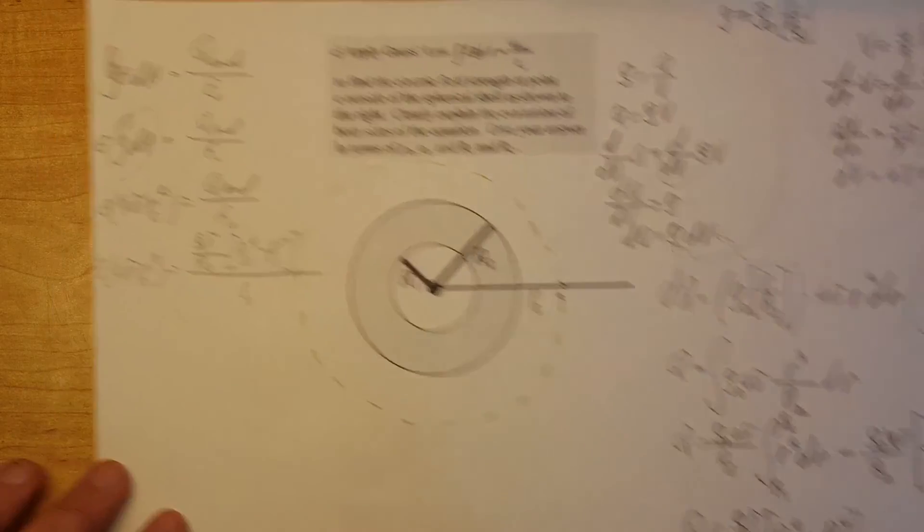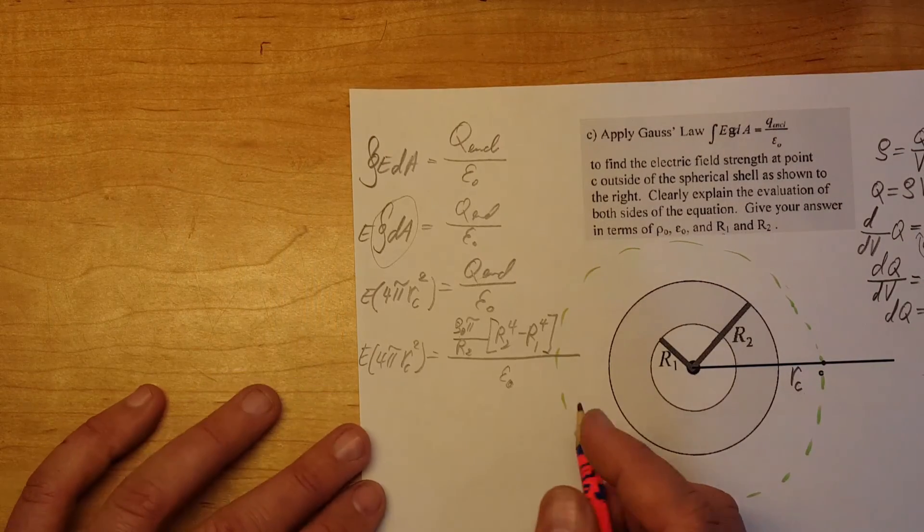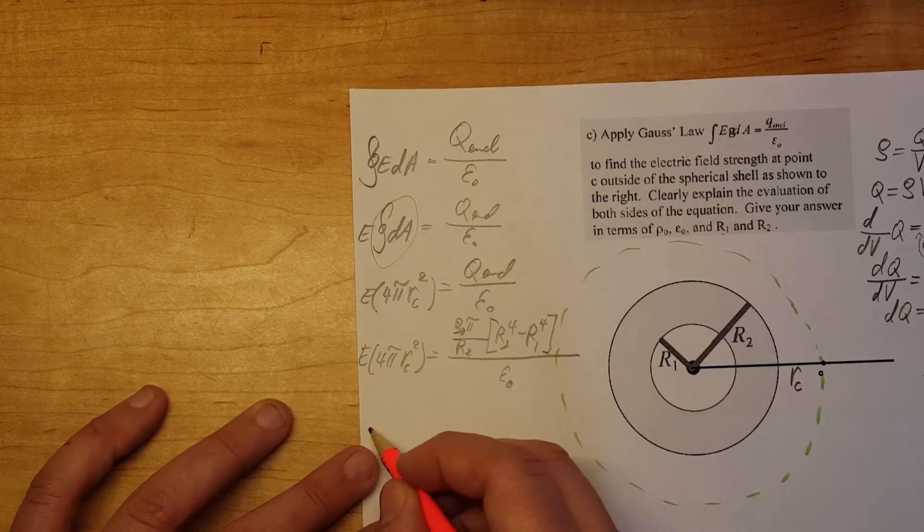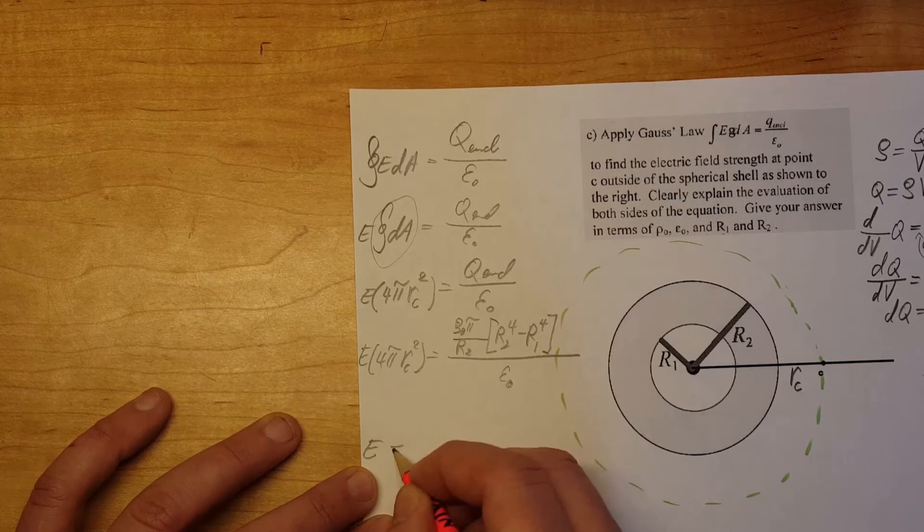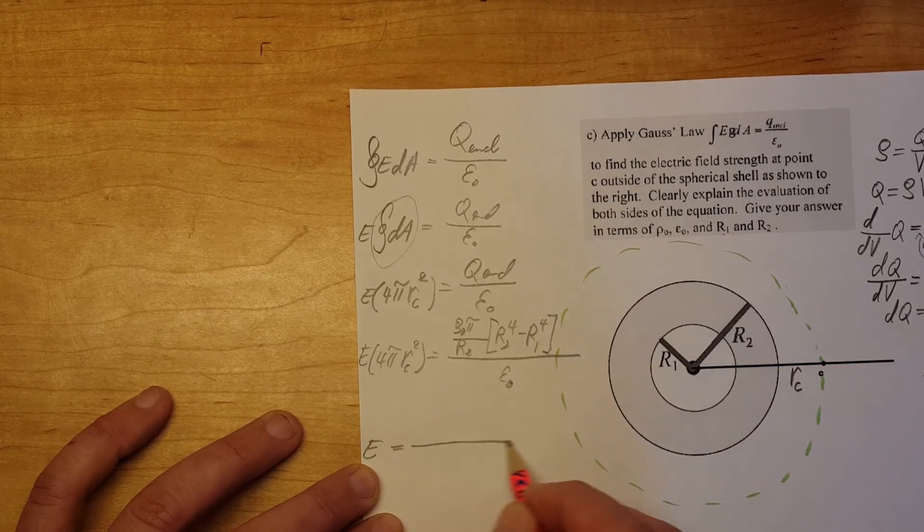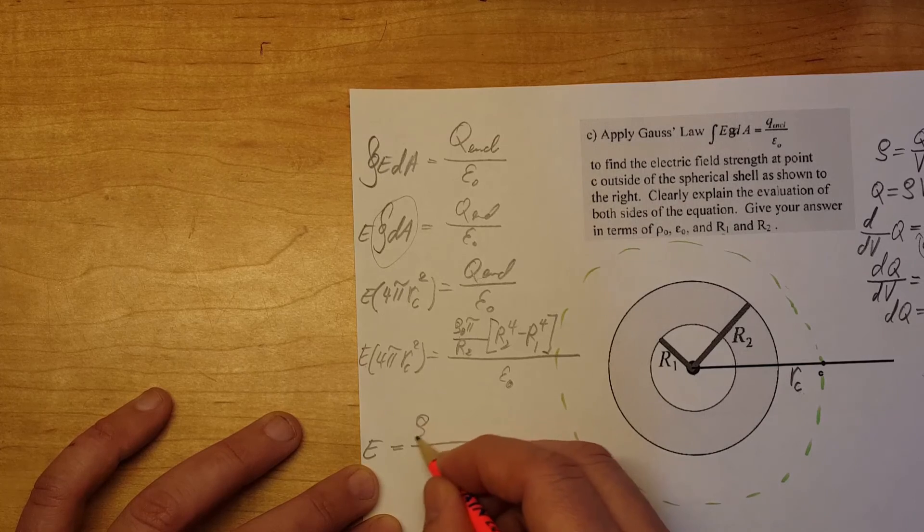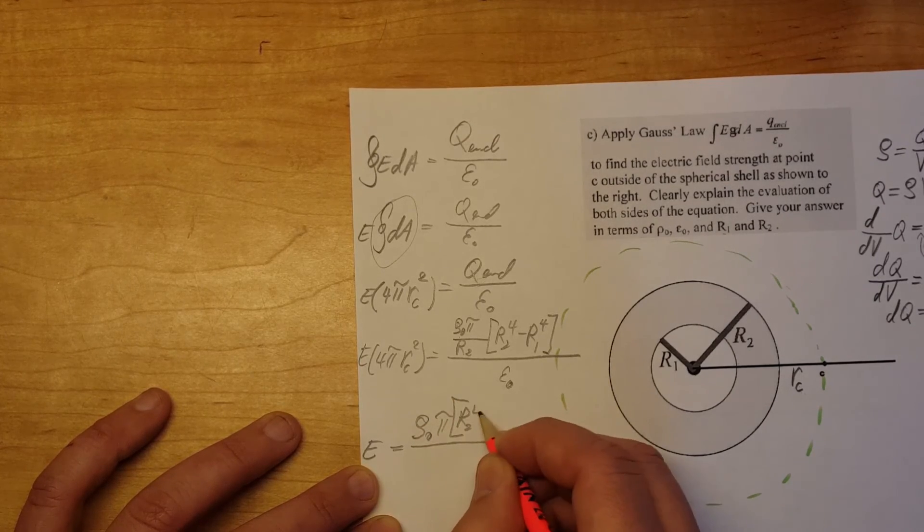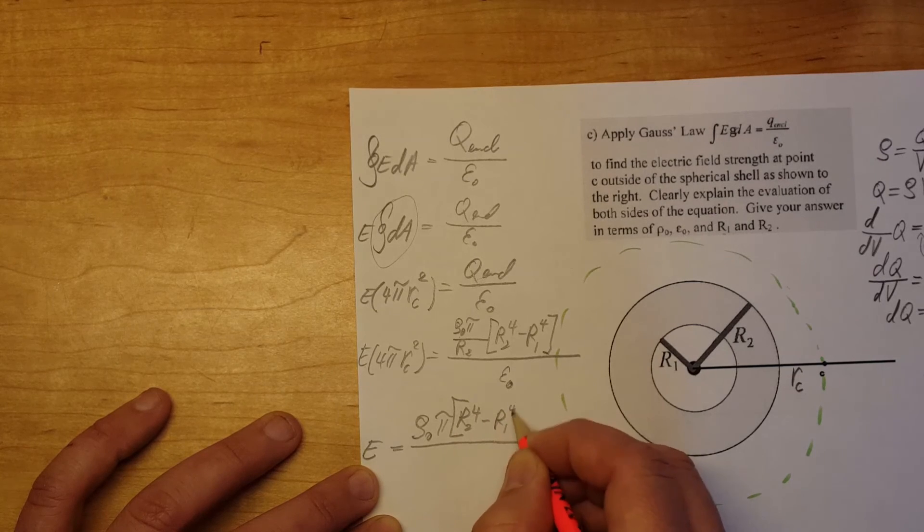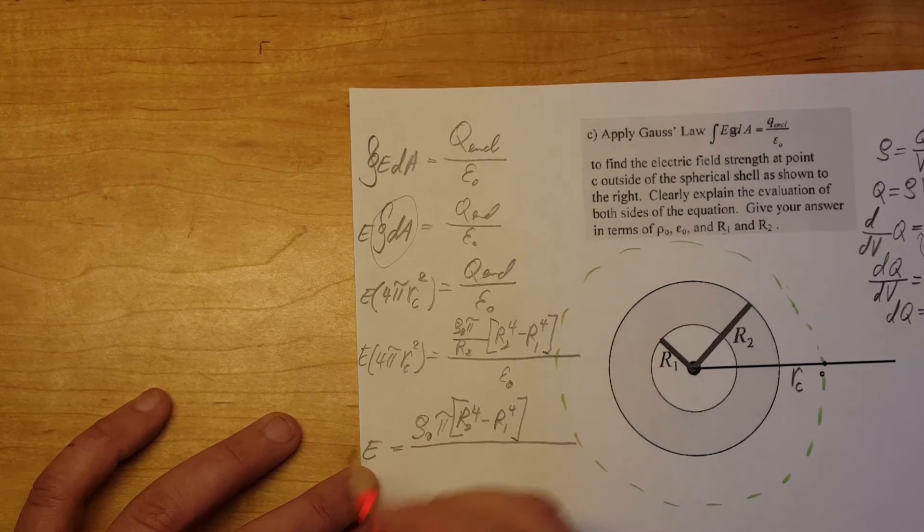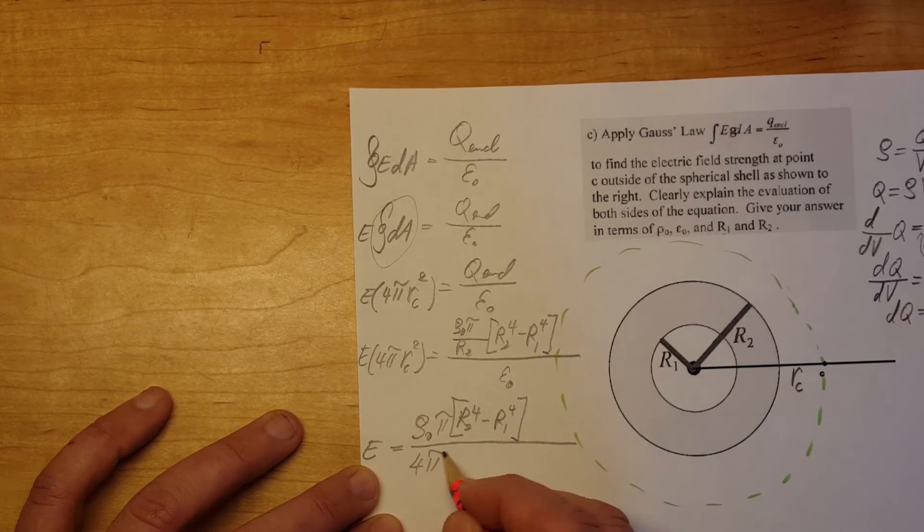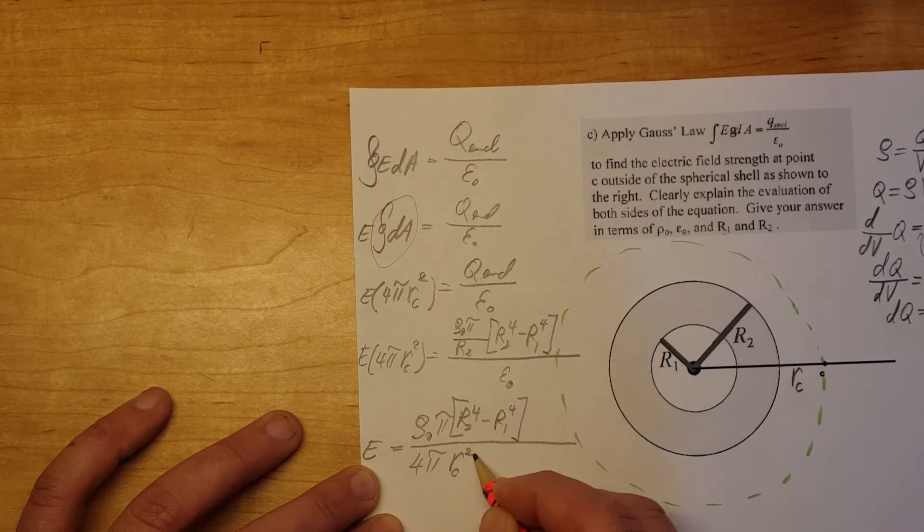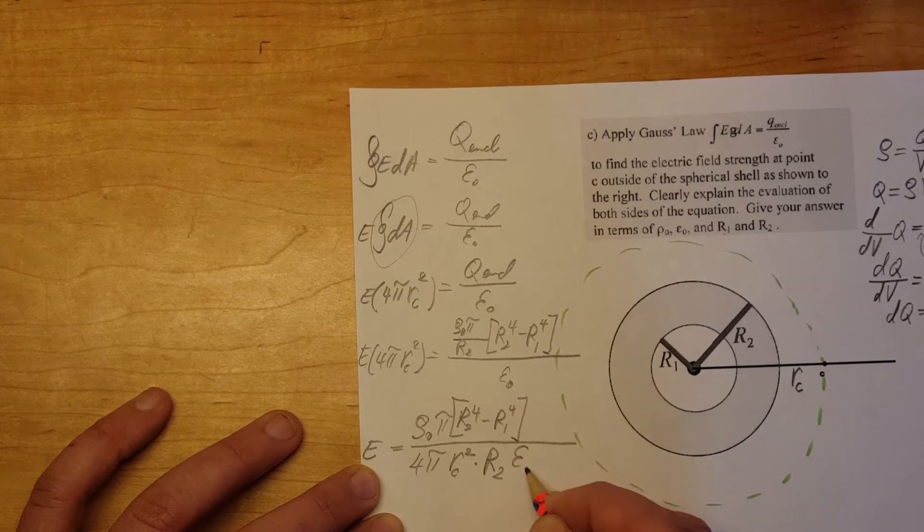Now we're going to simplify it down and make it look prettier and solve for E. E equals Rho 0 pi R2 to the 4th minus R1 to the 4th. And on the bottom we're going to have 4 pi Rc squared times R2 E0. Our pi simplifies out.